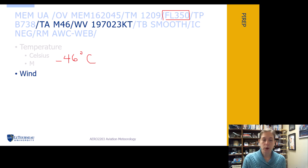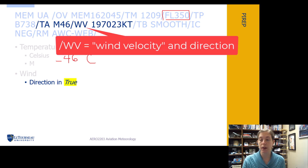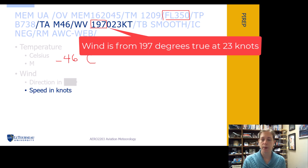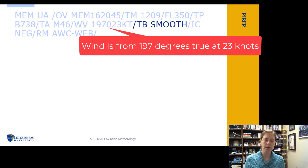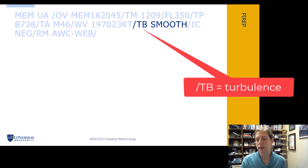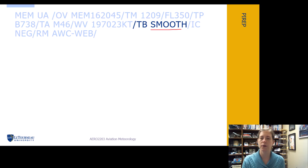Then we have the wind group, just like a METAR. This is text weather, so it's supposed to be given in degrees true. So this is saying 197 degrees true, and speed is given in knots — 23 knots. For turbulence, this aircraft reported it as just smooth, so that's a good ride there at 35,000 feet.